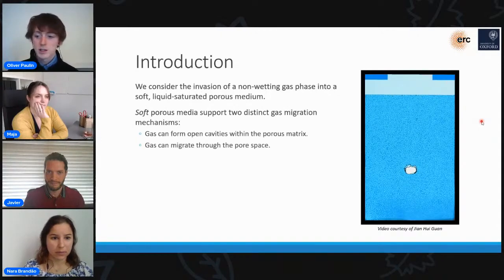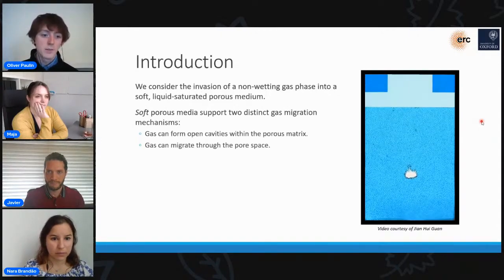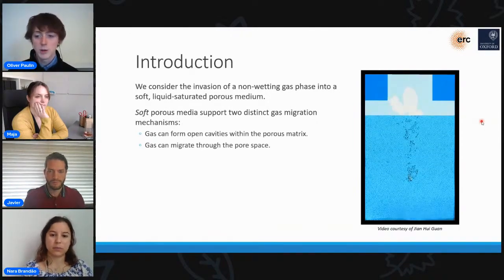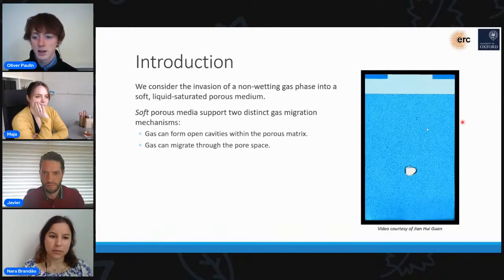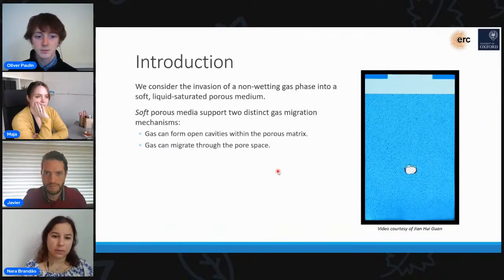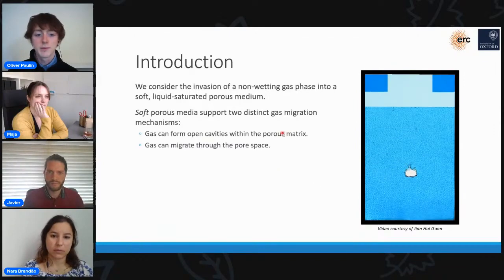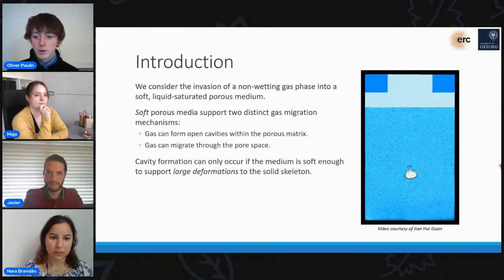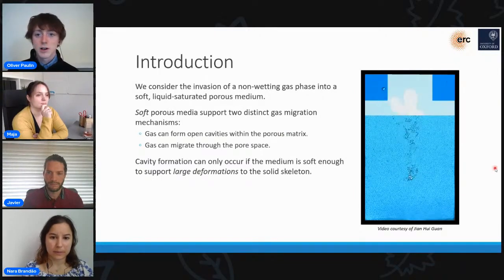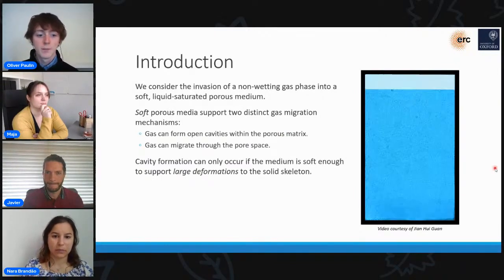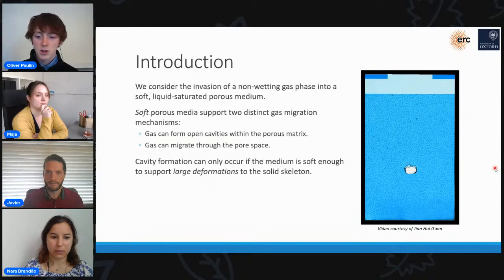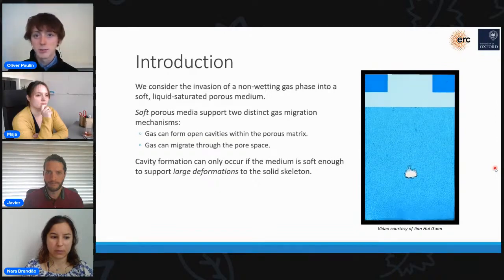So what you can see in this video is that these soft porous materials support these two distinct gas migration mechanisms. Either the gas can form open cavities within the solid packing by displacing the solid grains like you can see here, or it can migrate through the pore space itself by displacing pore liquid. In order to form these open cavities, the rest of the solid grains compress into a smaller volume, which means that this cavity formation can only occur if the solid skeleton is soft enough to support these large deformations.